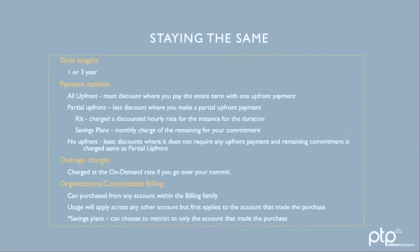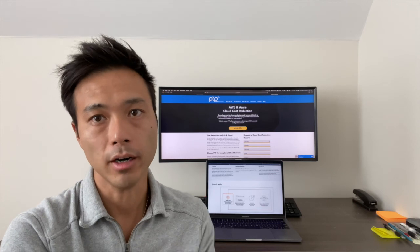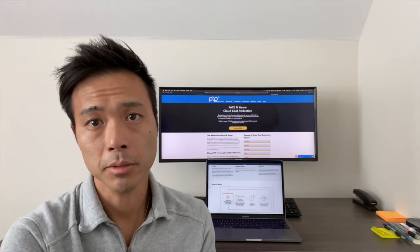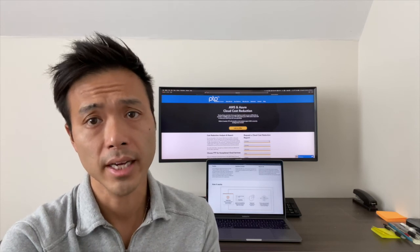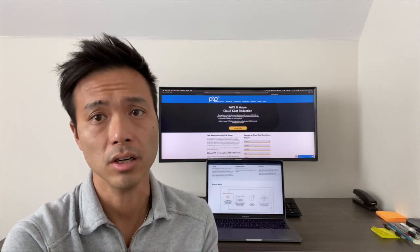Finally, the no upfront payment option provides the least discount among the three options, but it does not require any upfront payment. The remainder is charged at a discounted hourly rate for the duration of your RI term, or a monthly charge for your commitment in terms of savings plan. As for overage charges, savings plans are the same as RIs — you will be charged at the on-demand rate if you go over your commitment. If you are using AWS Organizations or consolidated billing, you can purchase in any account within the billing family, and you can also choose to restrict the benefit to only the account that purchased them. If you have both, AWS will apply all RIs first, and then apply savings plans to any instances not already covered by an RI.